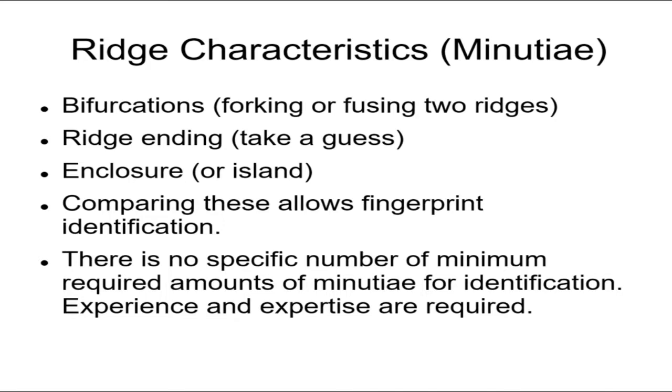Anyway, so identifying it as a loop, a whorl, or an arch doesn't really allow you to identify a single person. To do that, you have to look at what they call minutiae. It's called minutiae. These are ridge characteristics, and these are different for every single person.